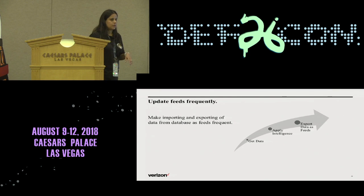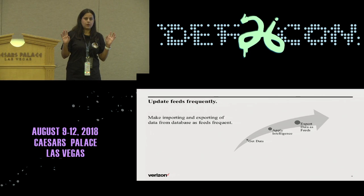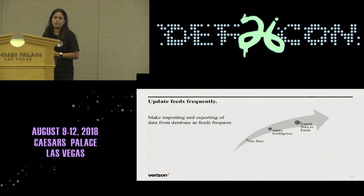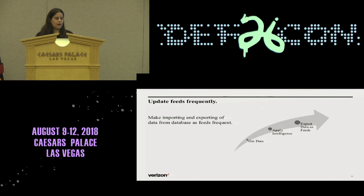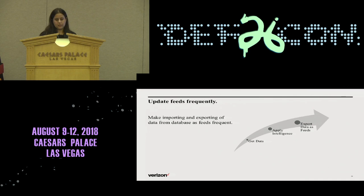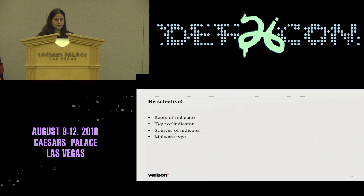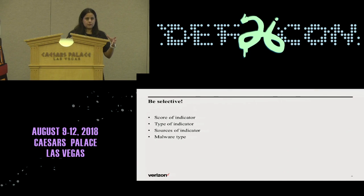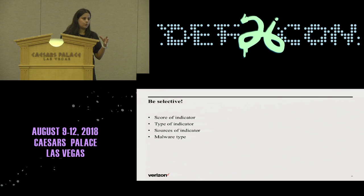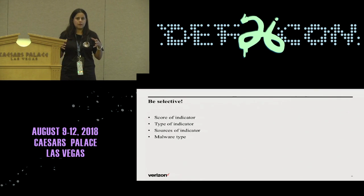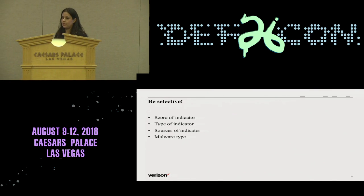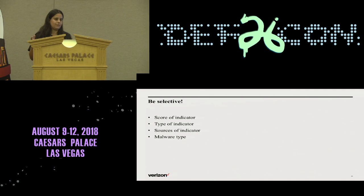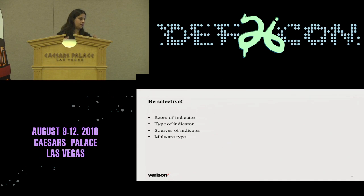When it comes to feeds, you cannot say that you built a feed a week ago and just submit it — it needs to be updated. Ingestion should happen in real time, and you need to apply the intelligence and algorithms we covered, and export the data at least on an hourly basis to have almost real-time feeds. You can be selective — with a pool of indicators based on different criteria and attributes, you can select what interests you. If you want to select only hash indicators, you can apply that. If you want based on malware type, or the most recent indicators seen through different networks, you can extract that information from the database.